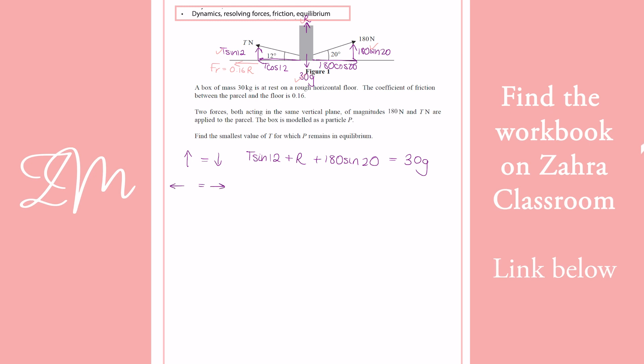And then we've also got left equals right. So we're going to have T cos 12 plus 0.16R. So I've written friction straight away as mu R. So remember, friction is mu R. Mu being your coefficient of friction. And that equals 180 cos 20.